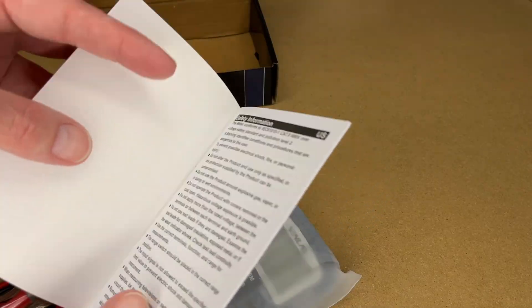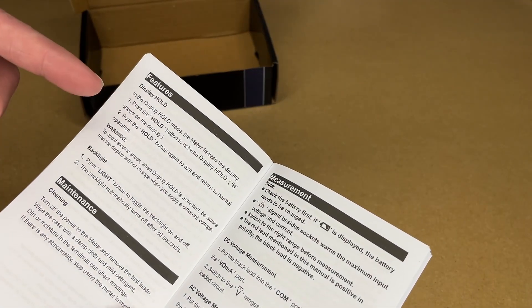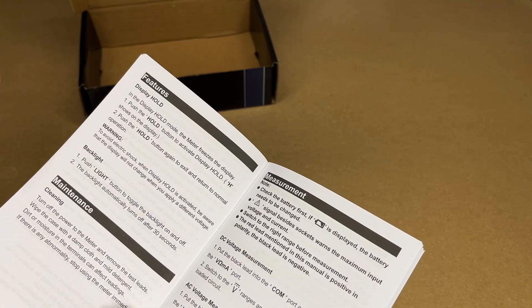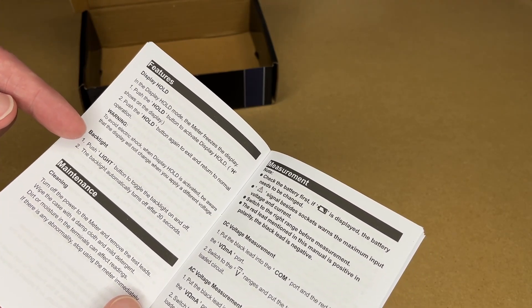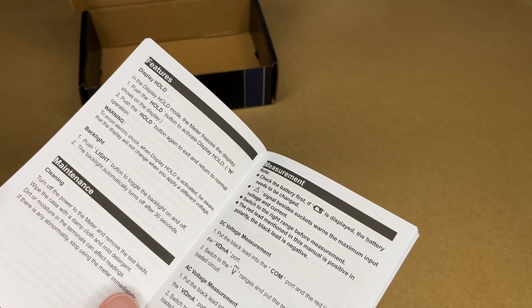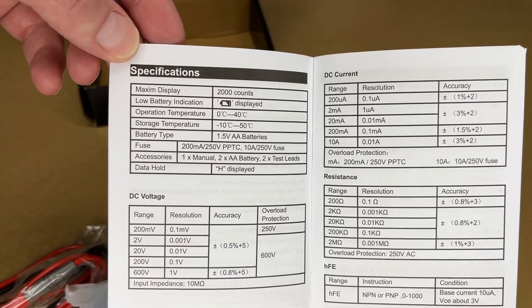So we have safety information, features, maintenance. It has a hold feature—you press it to freeze the display, and then you can press it again to return to normal. It also has a backlight. Push the backlight to turn it on and off, and it will automatically turn off after 30 seconds. This talks about measuring here. Here's some specs. You can pause and read through these.